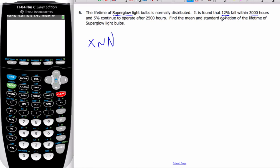I want to find the mean and standard deviation of the lifetime of Superglow. I need the mean and the standard deviation. So it says 12% fail within 2000 hours. Here's my normal curve.